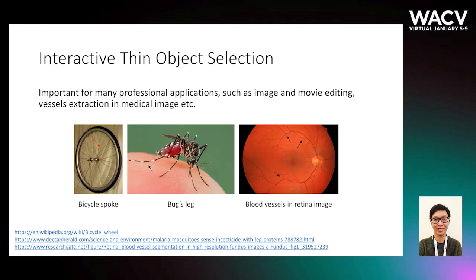In this work, we are particularly interested in the problem of segmenting objects with thin structures such as bicycle spokes, bark sticks, and blood vessels. Ensuring good segmentation quality of these thin structures has several important applications such as image and movie editing or medical image analysis.